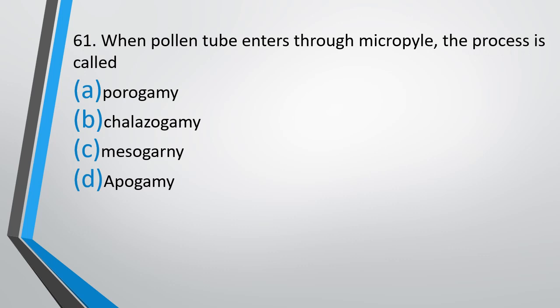Question No. 61: When a pollen tube enters through the micropyle, the process is called as: Porogamy, chalazogamy, mesogamy, or epogamy? Entry of pollen tube through the micropyle is called Porogamy — the correct answer is option A.